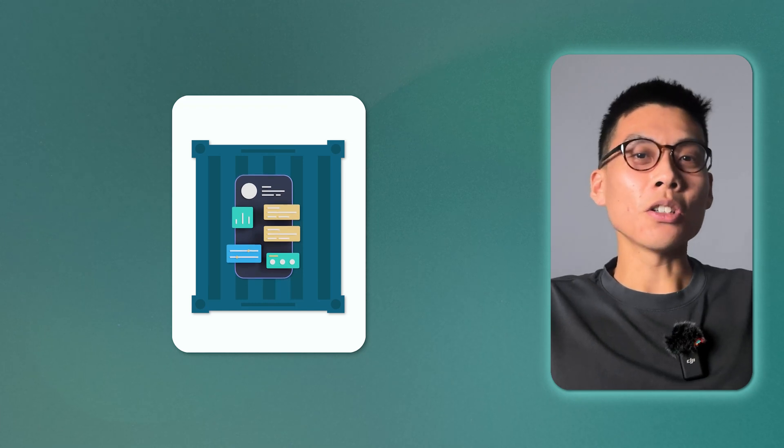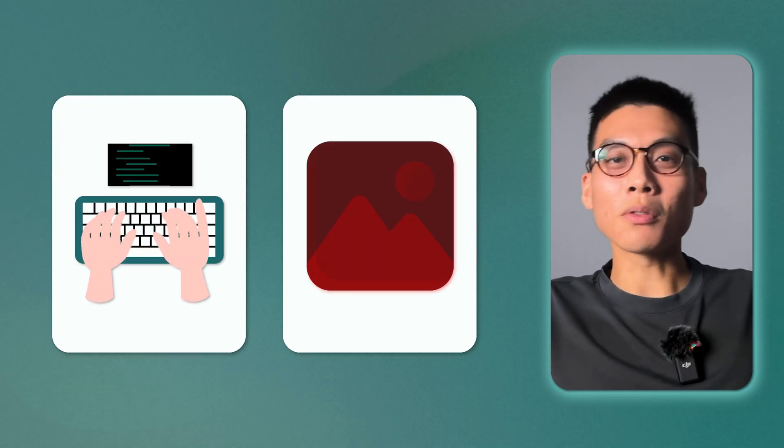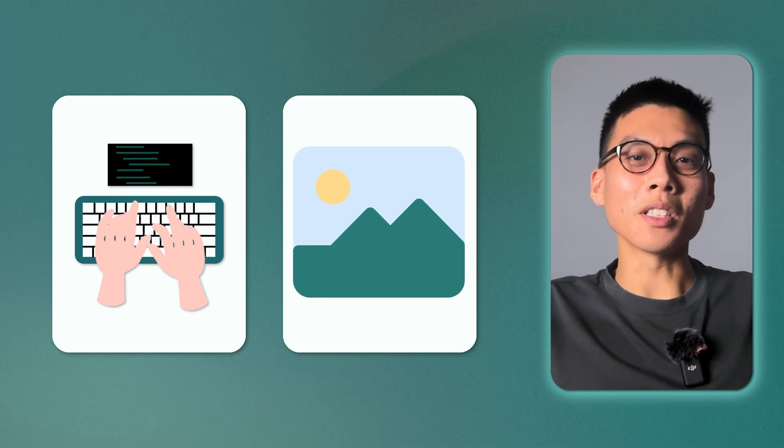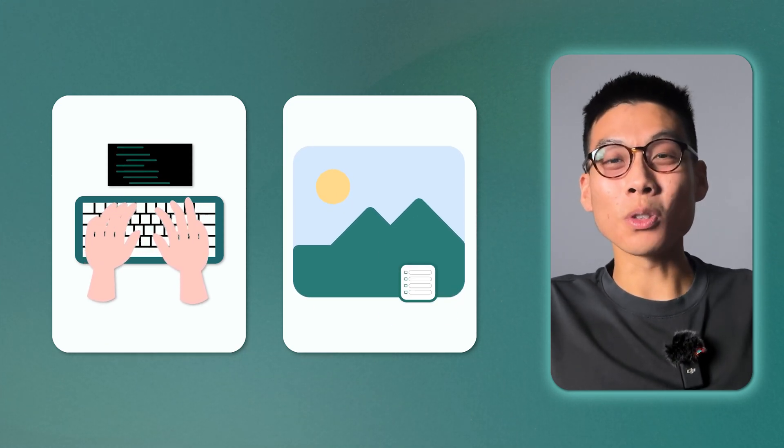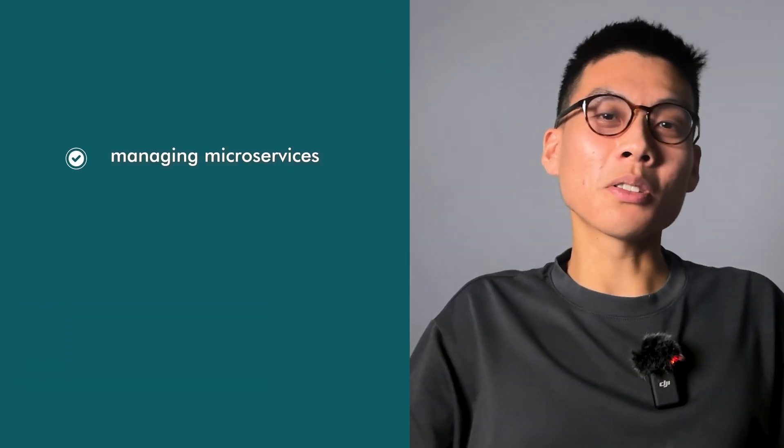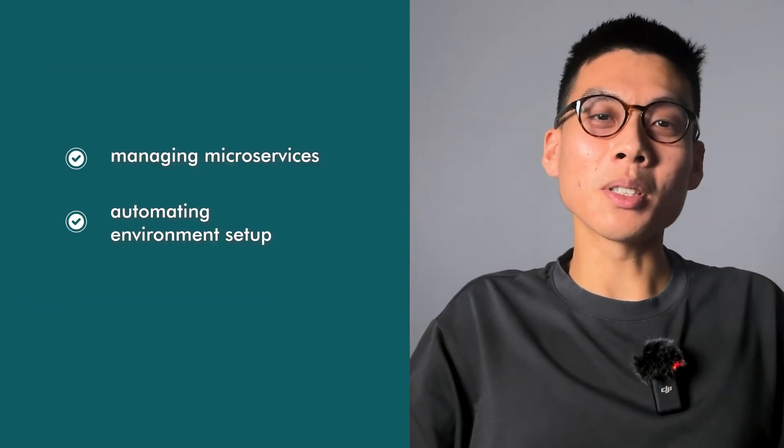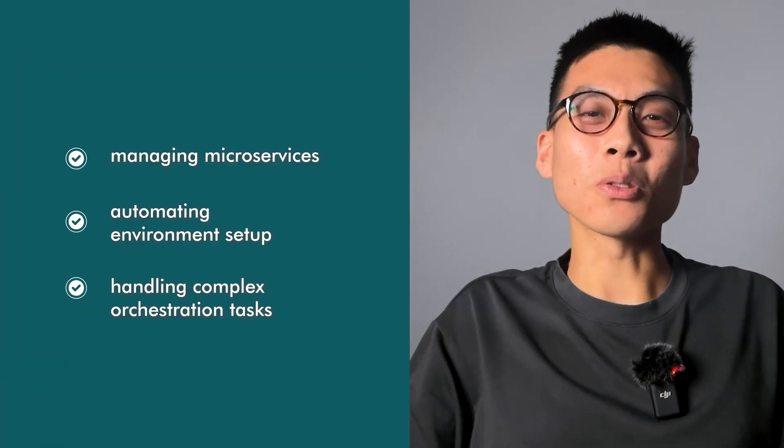Say you need to deploy a new version of your app in a container. You could write a bash script that pulls the latest image, stops the running container, starts a new one with the updated image, and even has some automated checks. You could be managing microservices, automating your environment setup, or handling complex orchestration tasks — these are the kinds of things that make you stand out in DevOps. From my personal experience, I've seen lots of DevOps job postings list Linux as a good-to-have skill, and many even set it as a requirement and will test your skills during an interview.